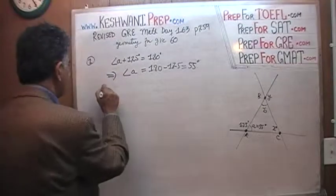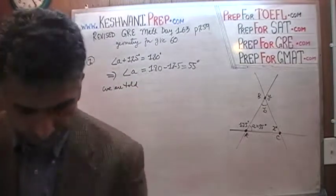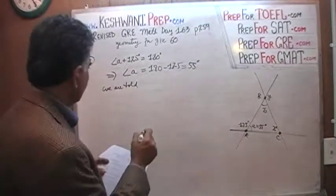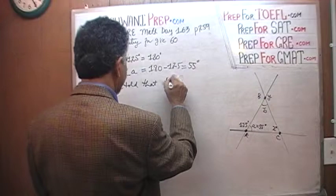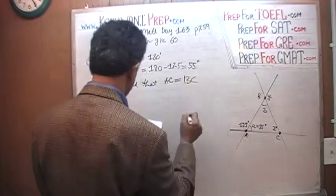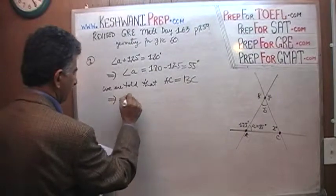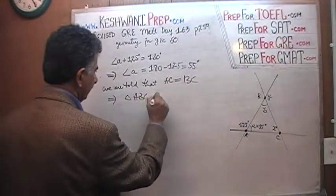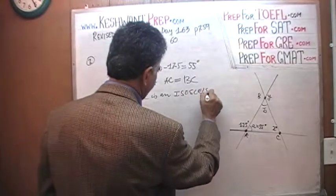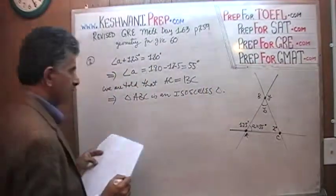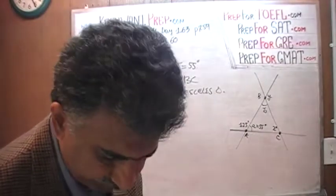We are told that AC equals BC. In other words, it implies that the triangle ABC is an isosceles triangle. AC equals BC. I am going to draw them here so that you can see which two lines are equal. AC equals BC, this line here equals this line.